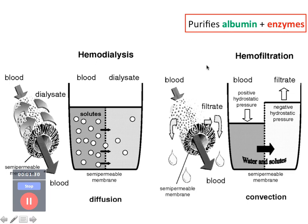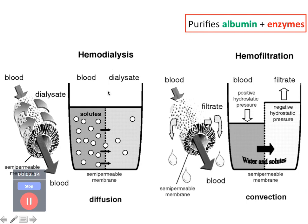Hemofiltration is similar in that blood flows through the filter, but along with solute removal there is also solvent removal — water removal. Solutes and solvent or water are eliminated together. This happens by a process called solvent drag, and the key principle influencing this movement is convection, which also helps in purifying albumin and enzymes. Hemofiltration removes solute and water, while hemodialysis predominantly involves clearance of solutes.